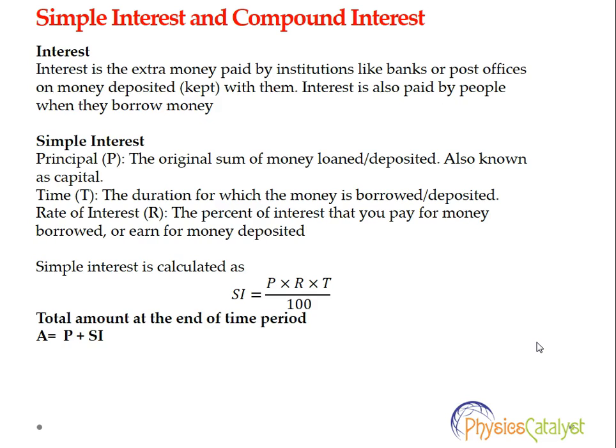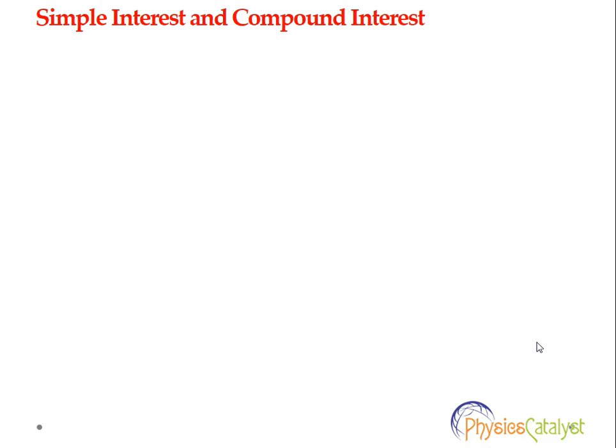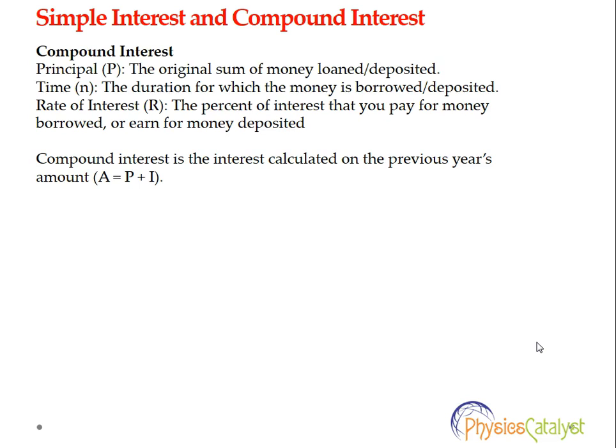Now let's take a look at compound interest. We again define the same terms: Principal P is the original sum of money loaned or deposited, Time is the duration for which the money is borrowed or deposited, and Rate of Interest is the percentage of interest paid for money borrowed or deposited. Compound interest is very different from simple interest.